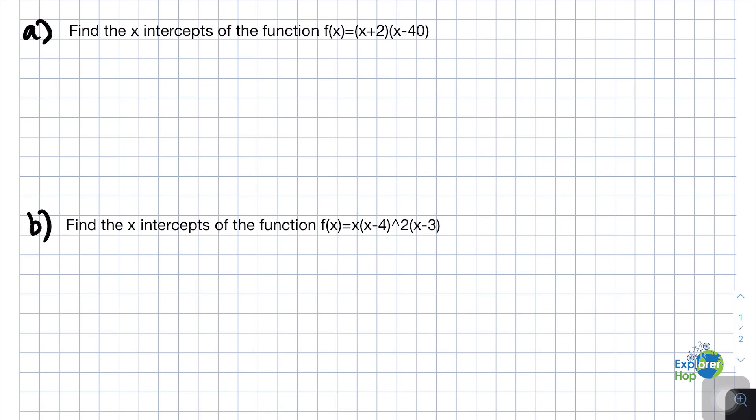So the first question states, find the x-intercept of the function f(x) equals (x+2)(x-40). As we have learned in the lesson, to find the x-intercept, you basically put the function equal to 0. Let's do that here.